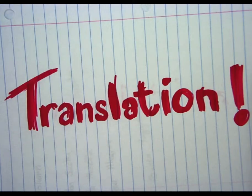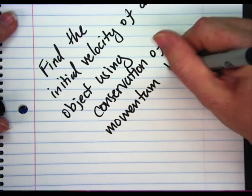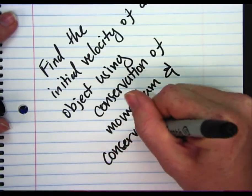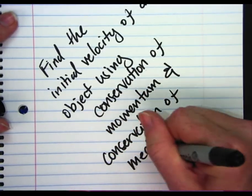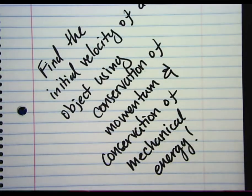Translation: find the initial velocity of a projectile using conservation of momentum, and then the conservation of mechanical energy.